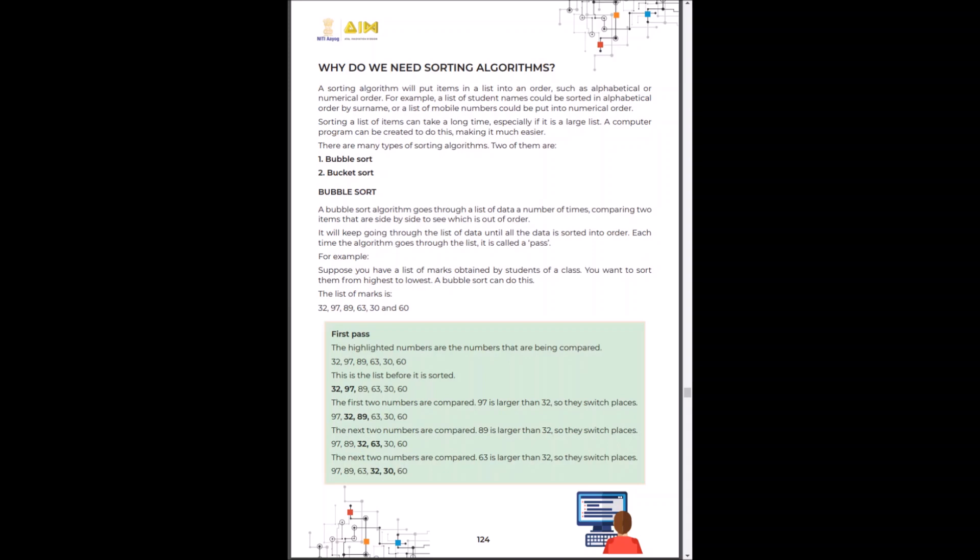Bubble sort compares two sets of data and checks whether they are in order or not. If they are not, it swaps their position and moves to the next set. You can read the content on the module to further understand about bubble sort.